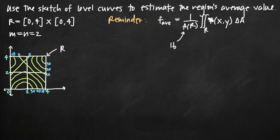Since we don't have an equation for f(x,y), we're going to have to use an approximation. You should always use midpoints if you can. If you can't, you can use the upper right, upper left, or lower left corner of each square. But midpoints are usually the most accurate estimation you can get, so we'll pick the midpoint of each one of our squares.